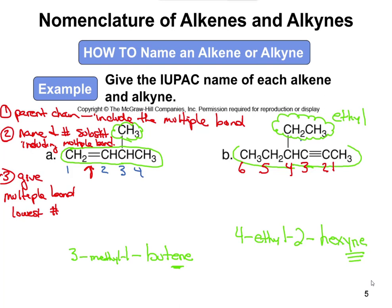So we're going to call that 4-ethyl-2-hexyne. Again, you find your parent chain — you have to include the multiple bond in that parent chain — then you name and number your substituents, making sure that you give that multiple bond the lowest possible number.